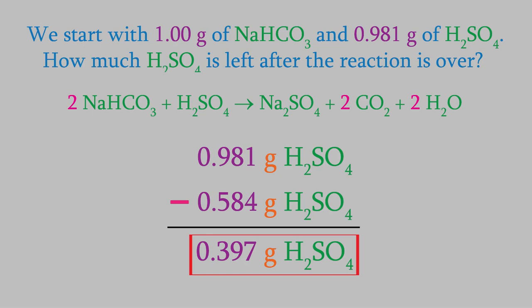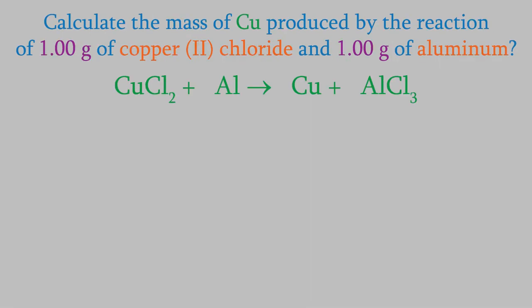Let's try one more limiting reactant problem. How many grams of copper metal would we get if we combine 1.00 grams of copper chloride and 1.00 grams of aluminum metal? If we look at the reaction, we can see that it isn't balanced. The copper and aluminum are balanced, so we just need to balance the chlorines. There are 2 on the left side and 3 on the right. We can get 6 chlorines on each side by putting a coefficient of 3 on the copper chloride and a coefficient of 2 on the aluminum chloride. Now the chlorines are balanced, and we just need to balance the copper and the aluminum. Once we do that, our reaction is balanced.